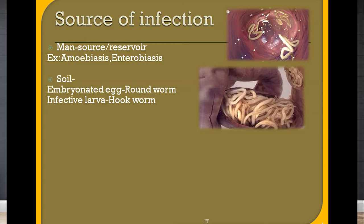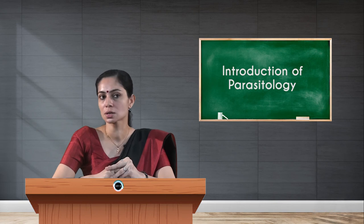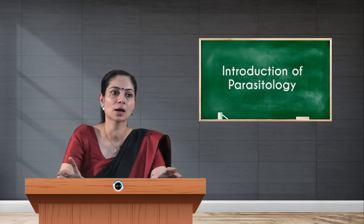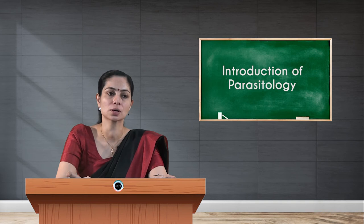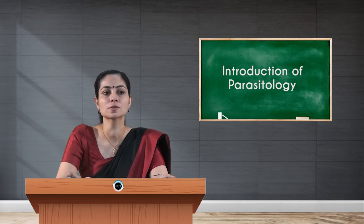The next source of infection is soil. Soil gets contaminated with embryonated eggs or infected larvae of parasites. For example, roundworm (Ascaris lumbricoides) lays eggs that go into the soil, contaminating it — and you get infection from that contaminated soil. In hookworm infection, infected larvae in the soil can penetrate the skin of a patient walking barefoot.